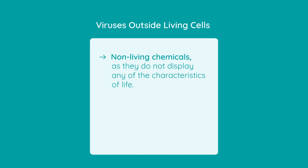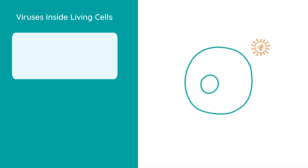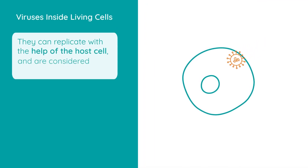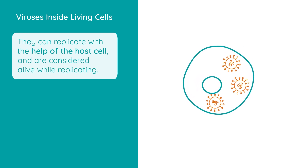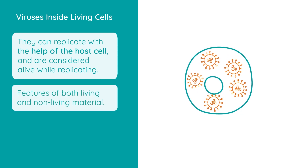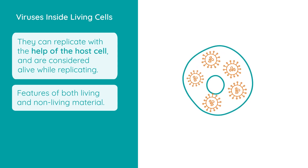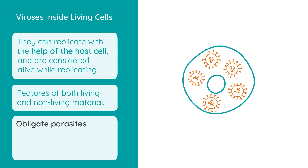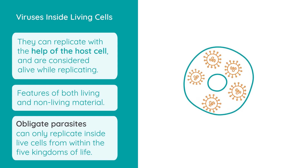For example, this means that viruses do not respire or carry out nutrition, and they cannot reproduce by themselves. Once inside a living cell, they can replicate with the help of the host cell, and so can be considered alive while replicating. We can say that viruses have features of both living and non-living material, and since they can only multiply inside living cells, viruses are called obligate parasites. This means that they can only replicate inside live cells from within the five kingdoms of life.